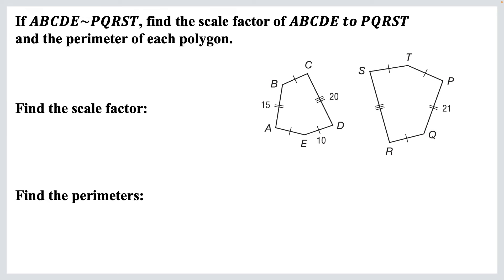So we're going to do small over big, or left over right. And the two corresponding sides that I can see, are 15 and 21. Because that's AB, those are the letters that come first, and PQ, those are the letters that come first. So, small over big, we've got 15 over 21, which reduces to 5 over 7. That's our scale factor. Now find the perimeters.